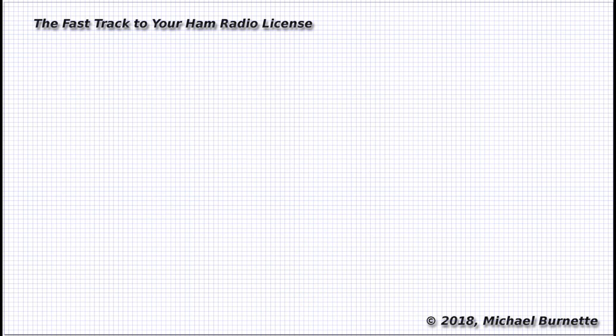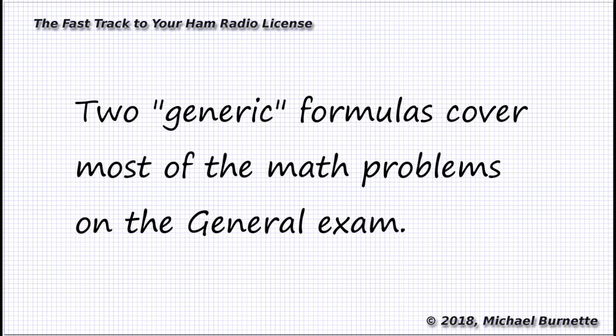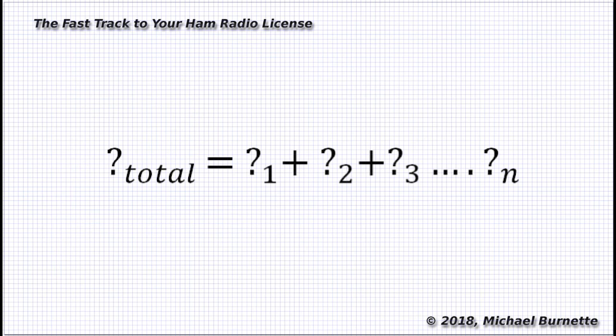The real trick is knowing when to apply which formula. So let's reduce this down to the two generic forms of the formulas. The first is one where all the values just add together. Whatever it is, total equals whatever it is, number one plus number two plus number three, etc., clear through to whatever it is n. The n means keep going until you run out of stuff to add up. Take all the whatever you gots, resistors, capacitors, inductors, and add them up. That's it.